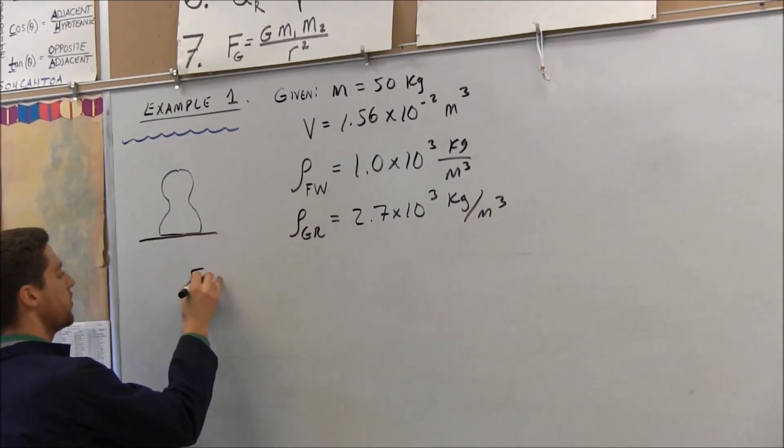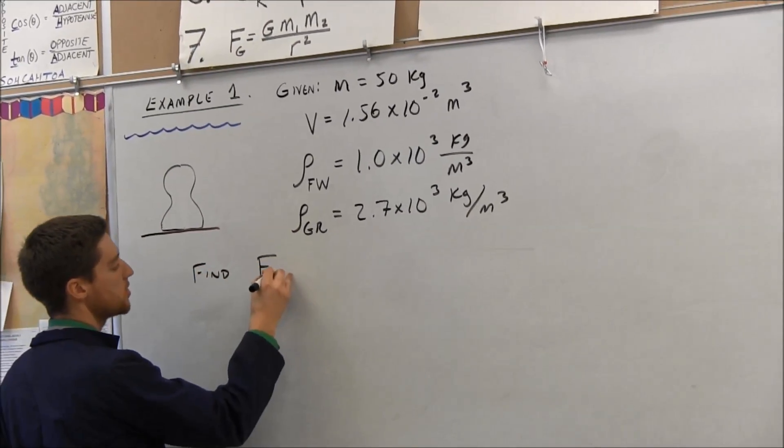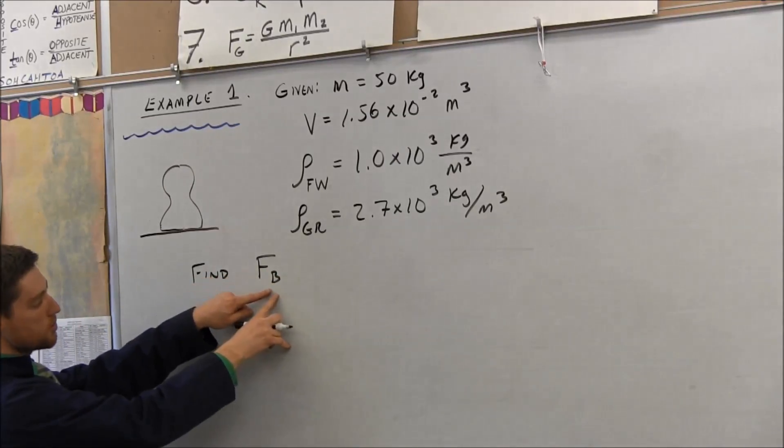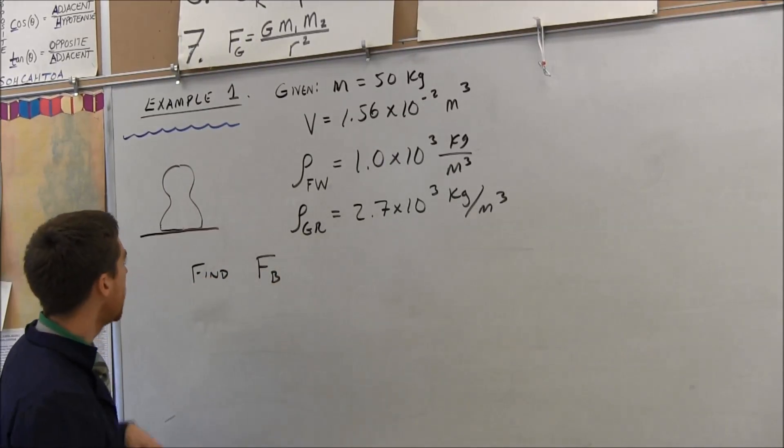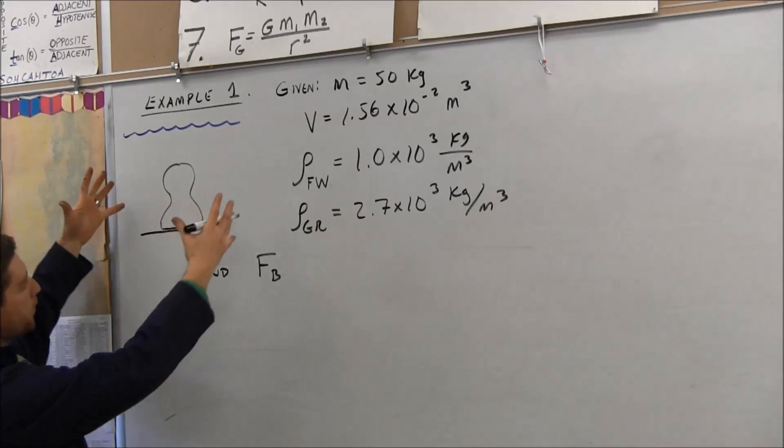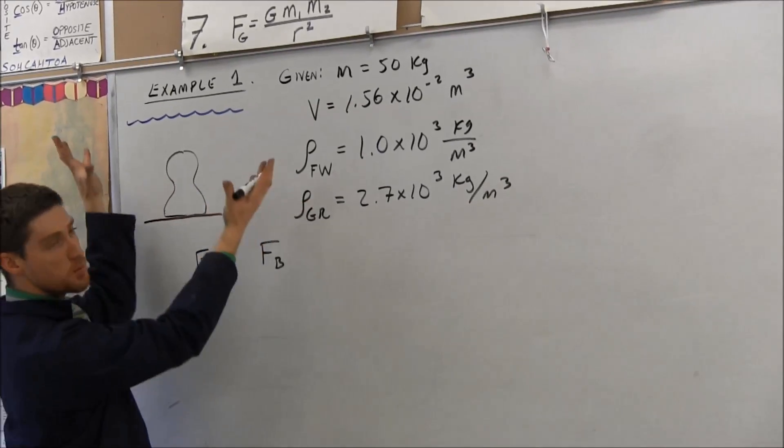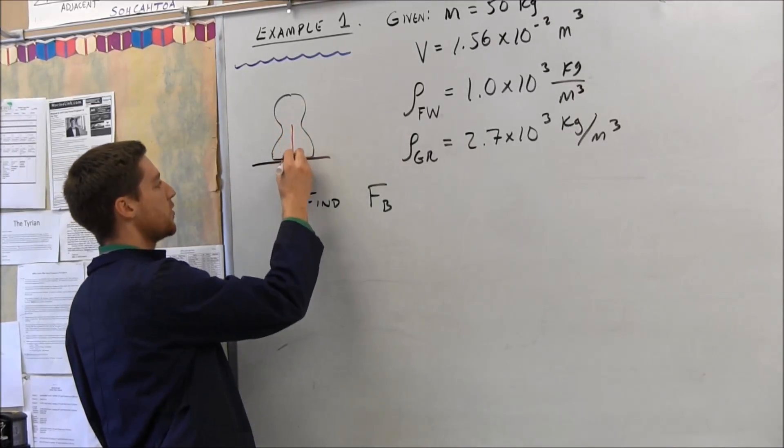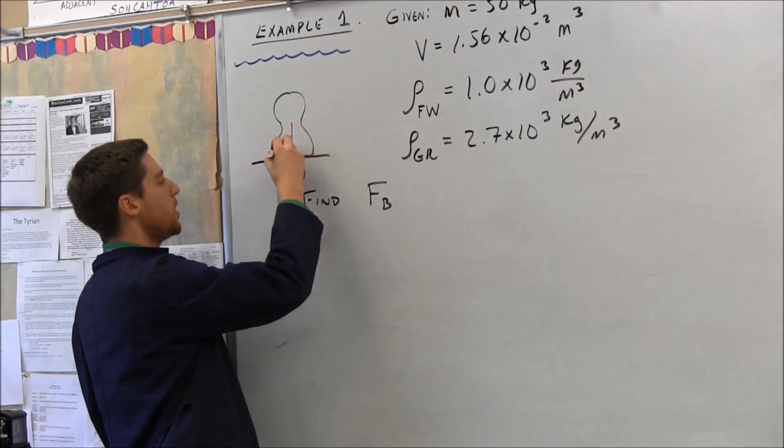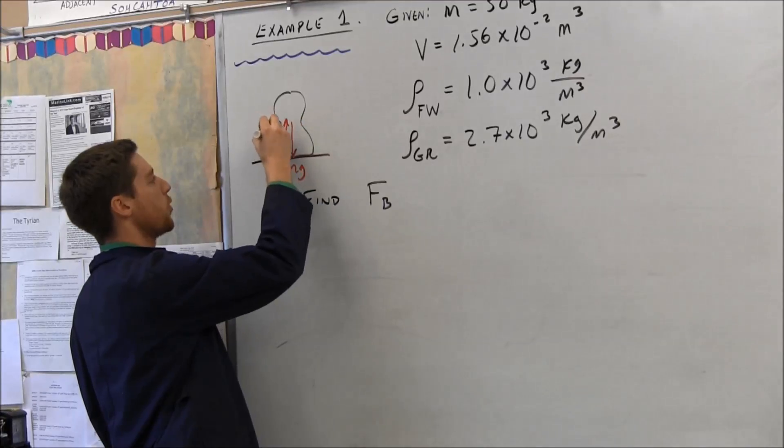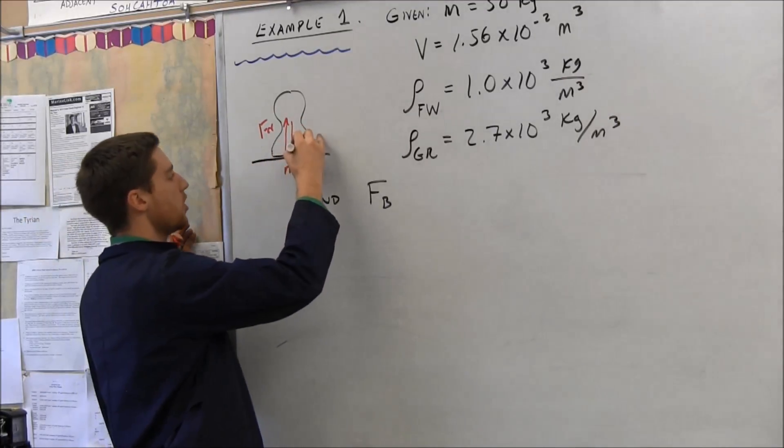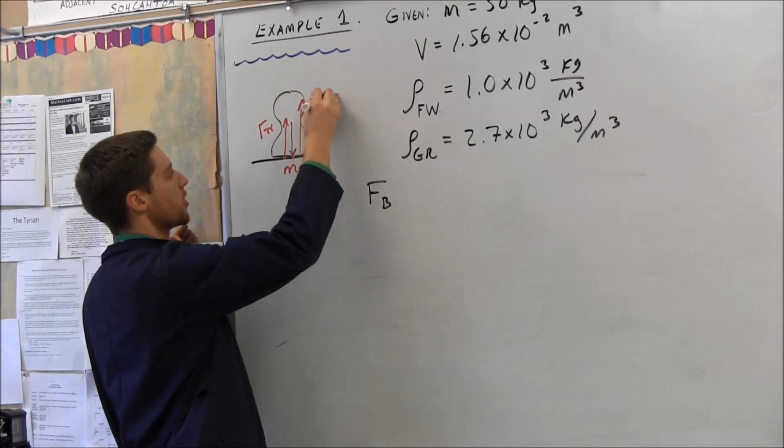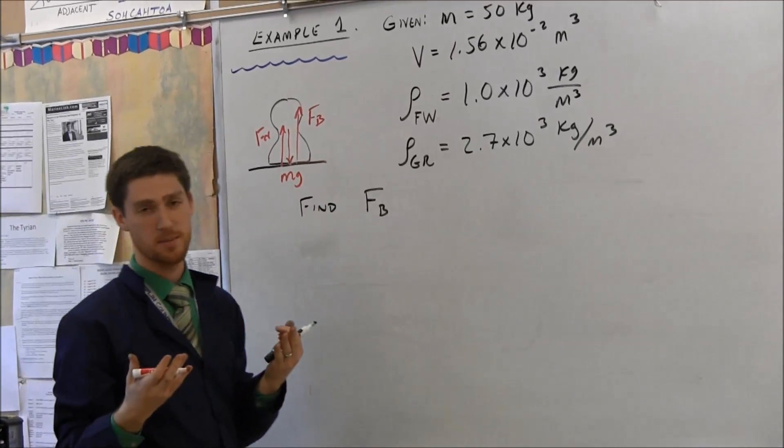I'll just say find the buoyant force, capital F subscript B for buoyant force. And in my sketch here, see that fluid, any fluid exerts a supportive force. That's what the buoyant force is. On this free body diagram, we would have a force due to gravity mg, maybe some small support force normal force from the floor, but then also we've got an upward support force from the buoyancy.